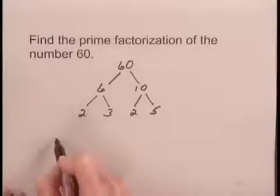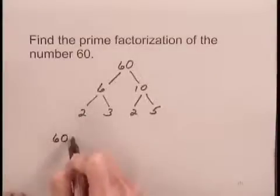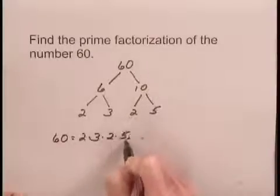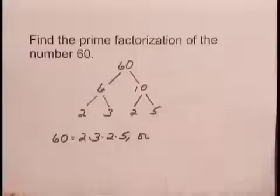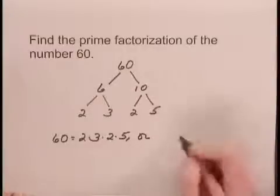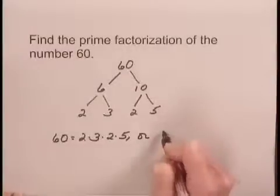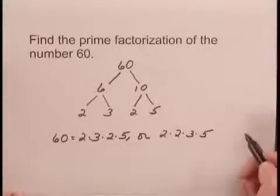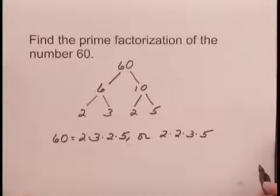So we have the prime factorization of 60 and we can write it as 60 equals 2 times 3 times 2 times 5. Or if we wanted to write all of the same numbers together we could write this as 2 times 2 times 3 times 5, and this is the prime factorization of the number 60.